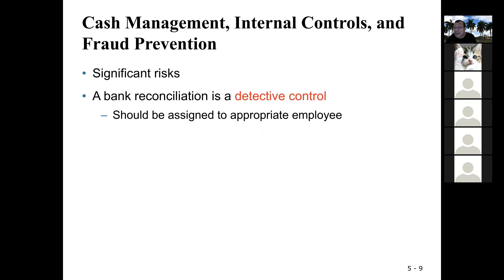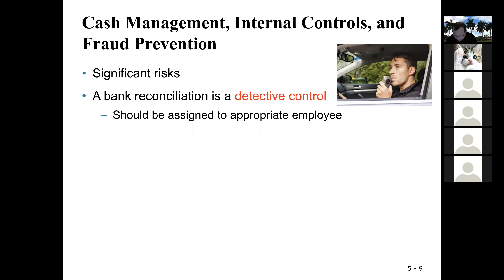Bank reconciliation is the detective control. What that means is, if you want to test someone — like a DUI, driving under influence — you ask them to blow their breath into the device, and this device will detect the level of alcohol. That's a detective control. You use a device to test and if there's an issue, you can catch it. Similarly, bank reconciliation is a detective control — once you perform the bank rec, you are able to detect if anyone is stealing money.